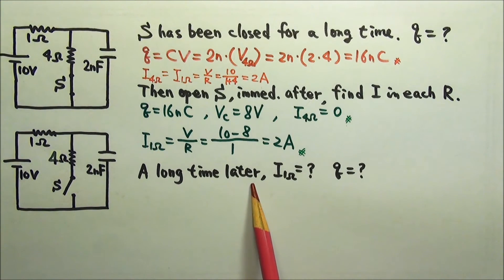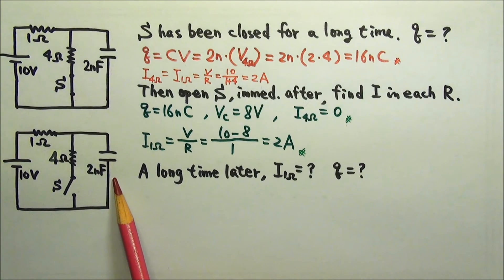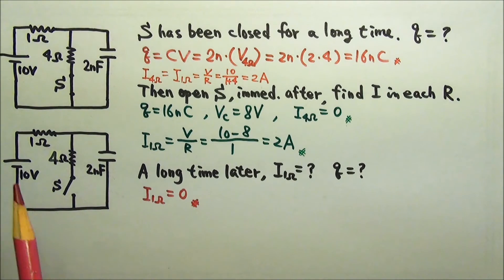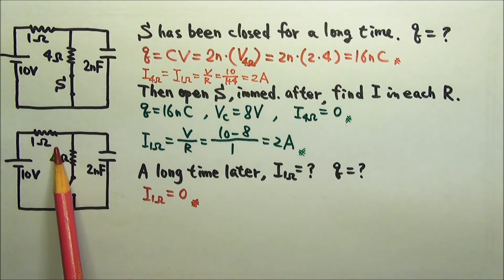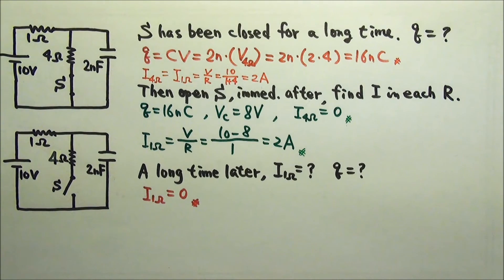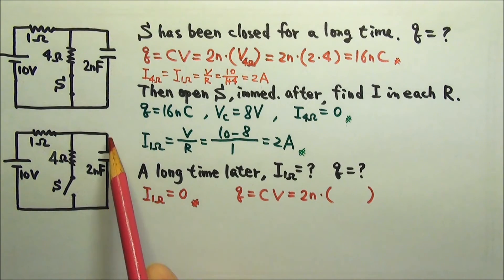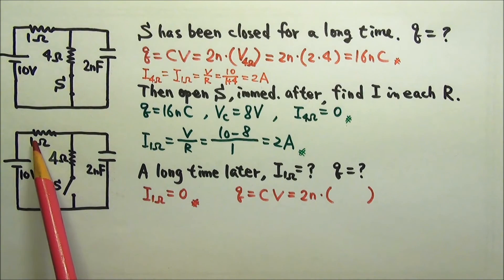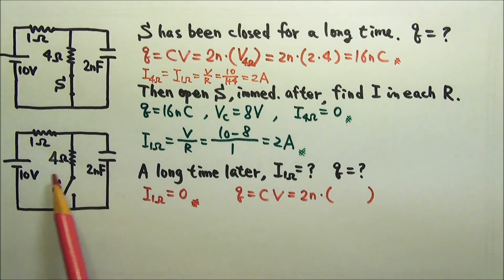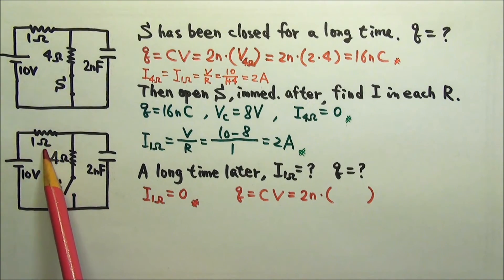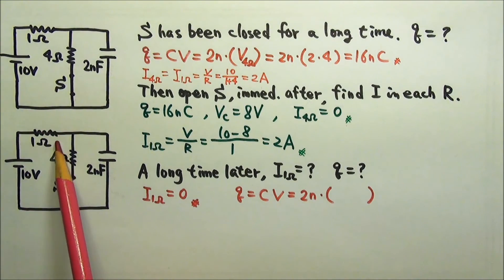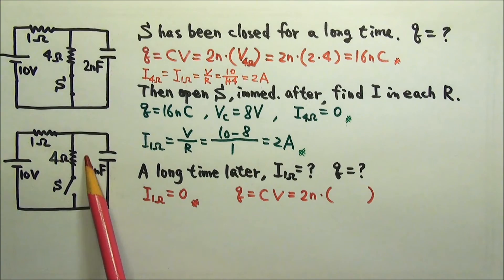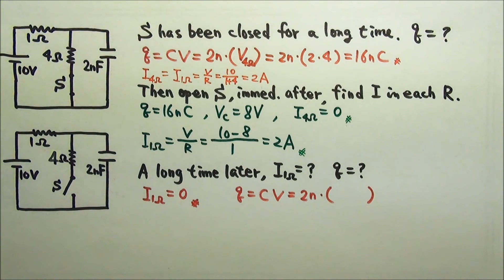A long time later, no more charges are coming onto the plates of the capacitor or leaving the plates, so there is no current in this segment. Since they are in series, the 1 ohm resistor would also get zero current. To find the charge on the capacitor, we use Q equals CV, so we need the voltage across the capacitor. Because these two are in series, together they share the 10 volts from the battery. This time, there is no current through the 1 ohm resistor, so the 1 ohm gets no voltage.